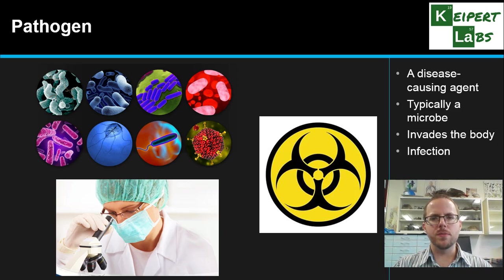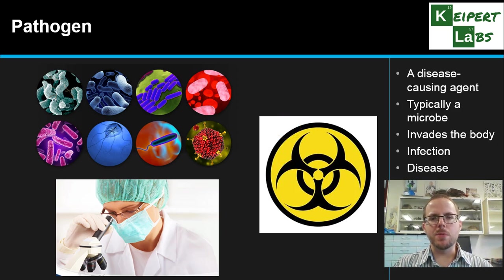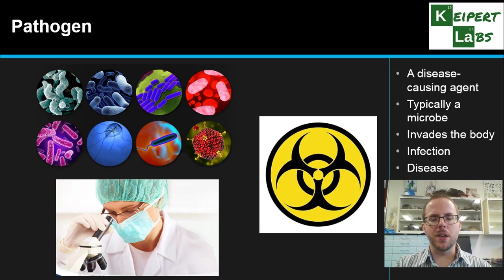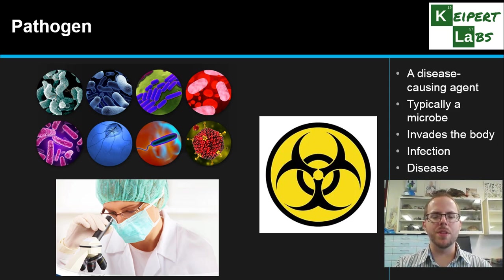We call this process infection — where the pathogen comes into your body, starts to invade and multiply, and moves throughout your system. It might stay in one spot, or it might spread through your bloodstream to every area of your body, depending on the pathogen. Then we get to the concept of disease. We define disease as when infection starts to have a negative impact on your body's systems. If the pathogen invades your body and multiplies but causes you no harm whatsoever, it's not causing disease. That's why we say it has the potential to cause disease.